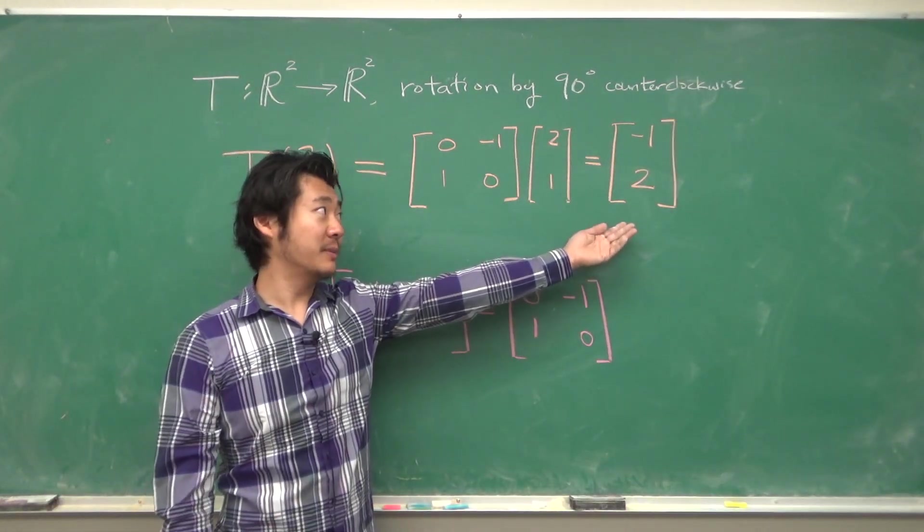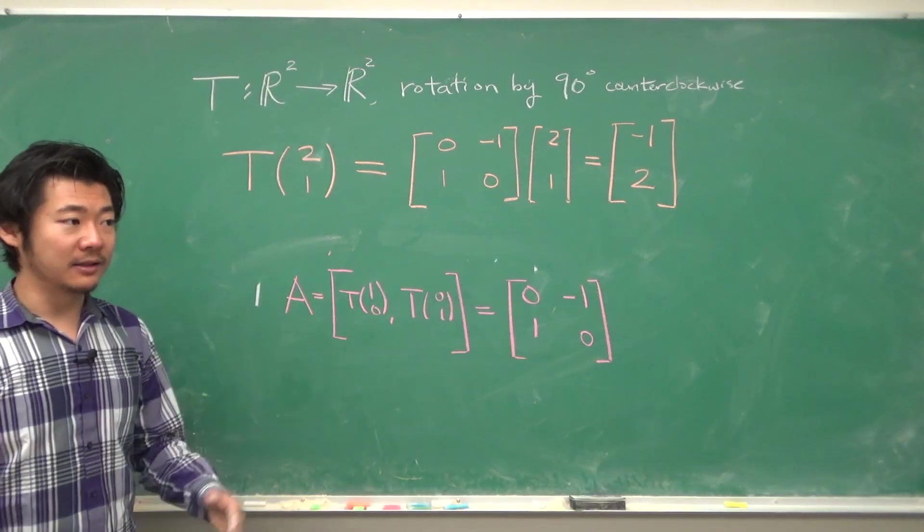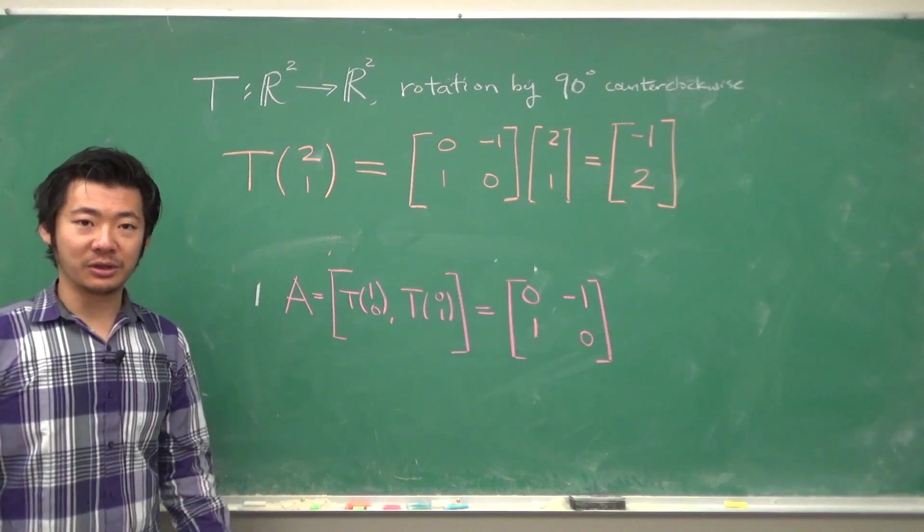So we get that the output vector must be (-1, 2), without having to use anything about linear equations of lines and their reciprocal slopes.